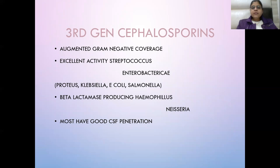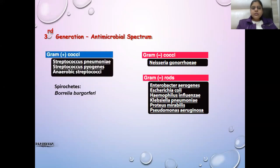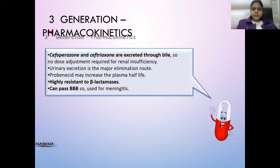Third generation cephalosporins are effective against gram-negative and gram-positive bacteria with augmented gram-negative activity. They are effective against Enterobacteriaceae, Proteus, Klebsiella, E. coli, Salmonella, beta-lactamase-producing Haemophilus, and Neisseria. Most have good CNS penetration. They are effective against Streptococcus pneumoniae, Neisseria gonorrhoeae, anaerobic streptococci, Escherichia coli, Haemophilus, Klebsiella, Proteus, and Stenotrophomonas. Cefoperazone and Ceftriaxone are excreted in bile, so they are safe in renal failure. Third generation drugs are highly resistant to beta-lactamases and can pass the blood-brain barrier.